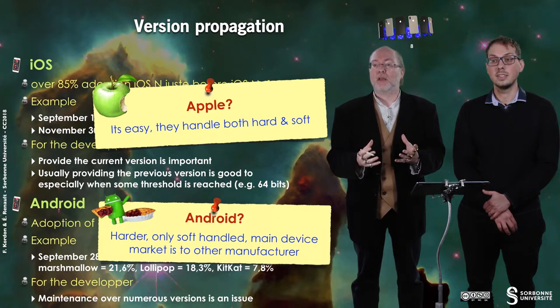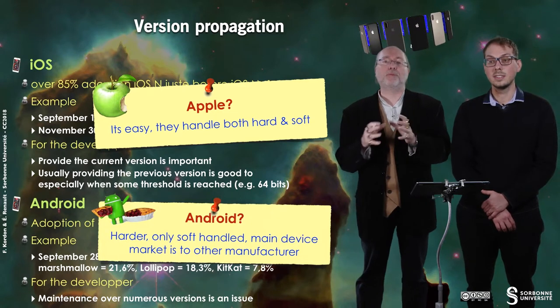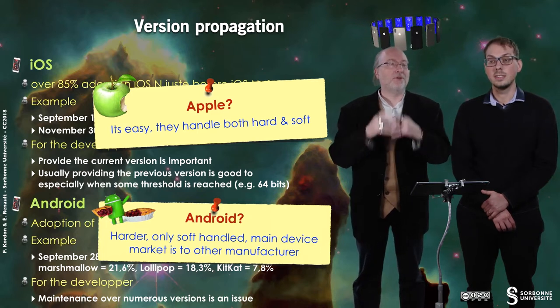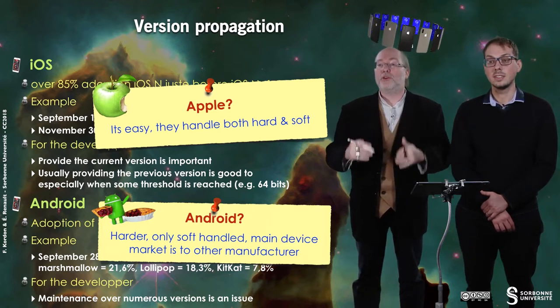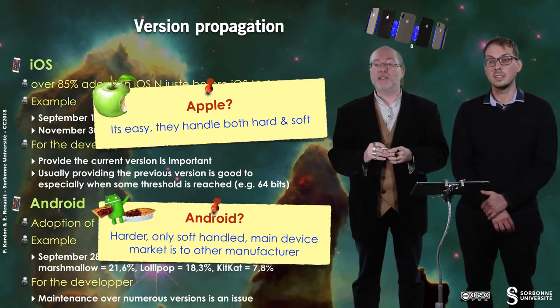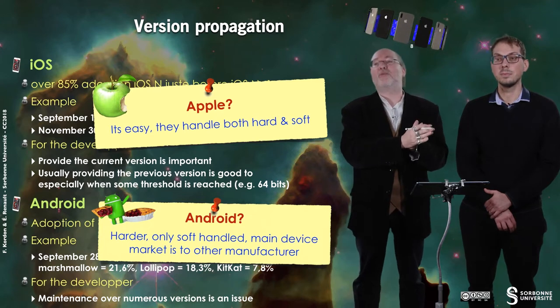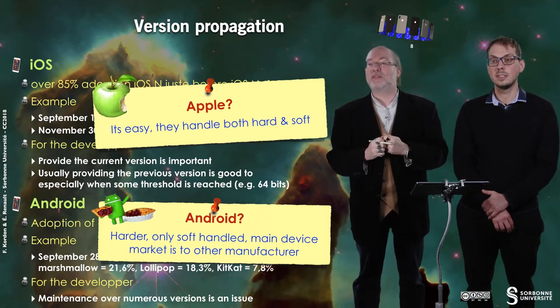For Apple, the situation is easy because Apple handles both the hardware and the software parts — they build everything together. For Android it's more complex, except maybe for Pixel devices, which are not representative of all Android devices in the world. You have to go through third-party companies, and typically when a company like Samsung pushes a new device on the market, it will be more interested in providing the latest version of Android on its new device than updating older ones that will bring less profit.